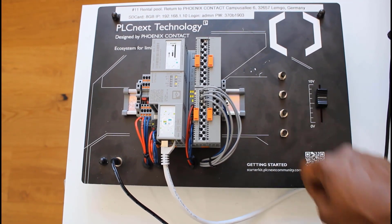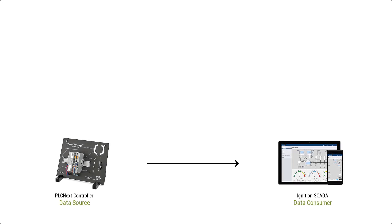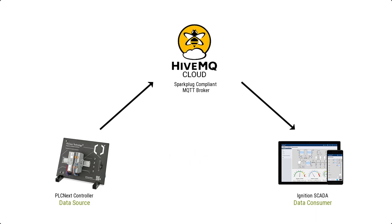One of the biggest challenges in integrating data from industrial data sources is the ability to automatically discover components that are producing the data. The simplest way to achieve that is to connect your data sources to an MQTT Sparkplug network. In this demo I'm going to showcase how, using its MQTT Engine module, the Ignition Scada platform can automatically discover my PLCnext controller and visualize the telemetry data it is generating.